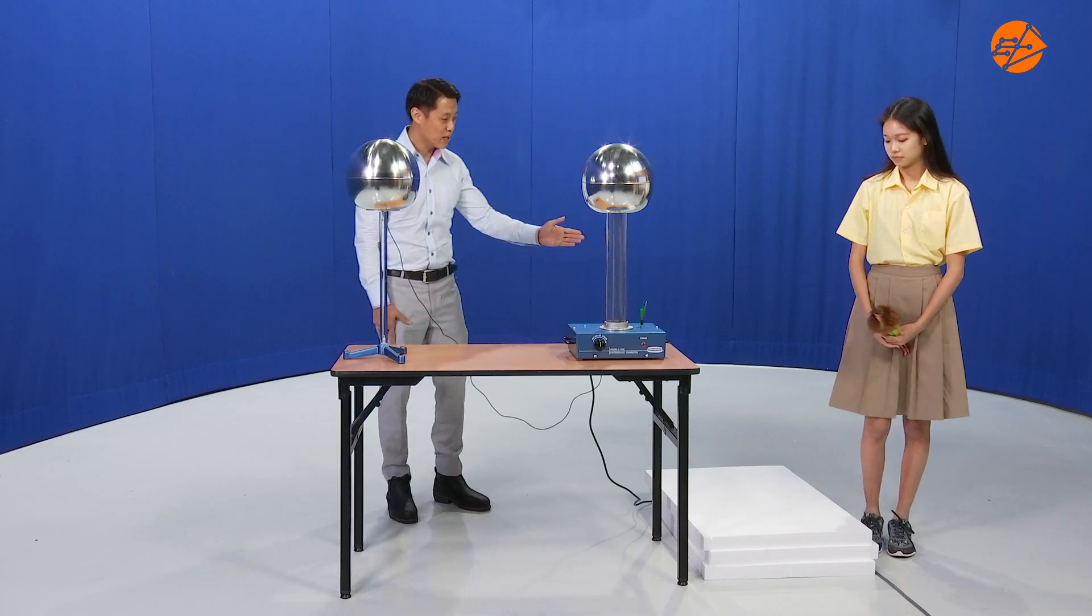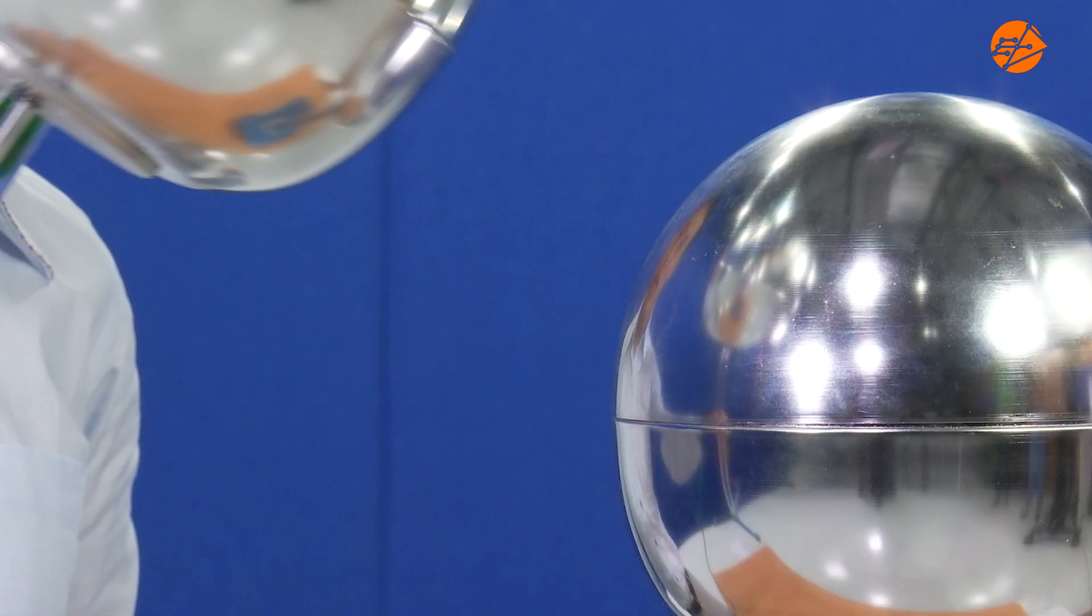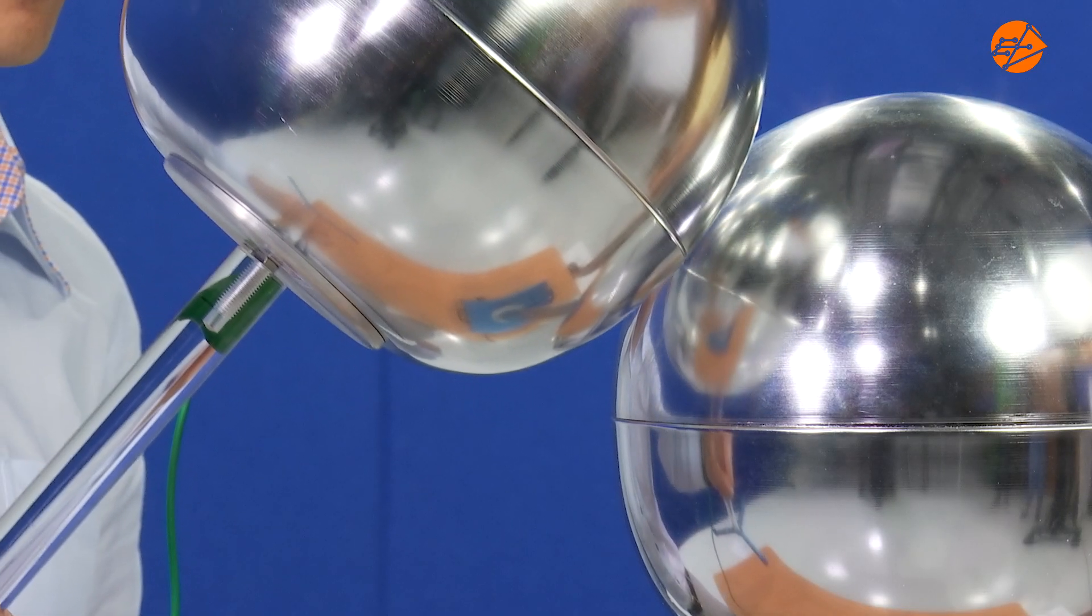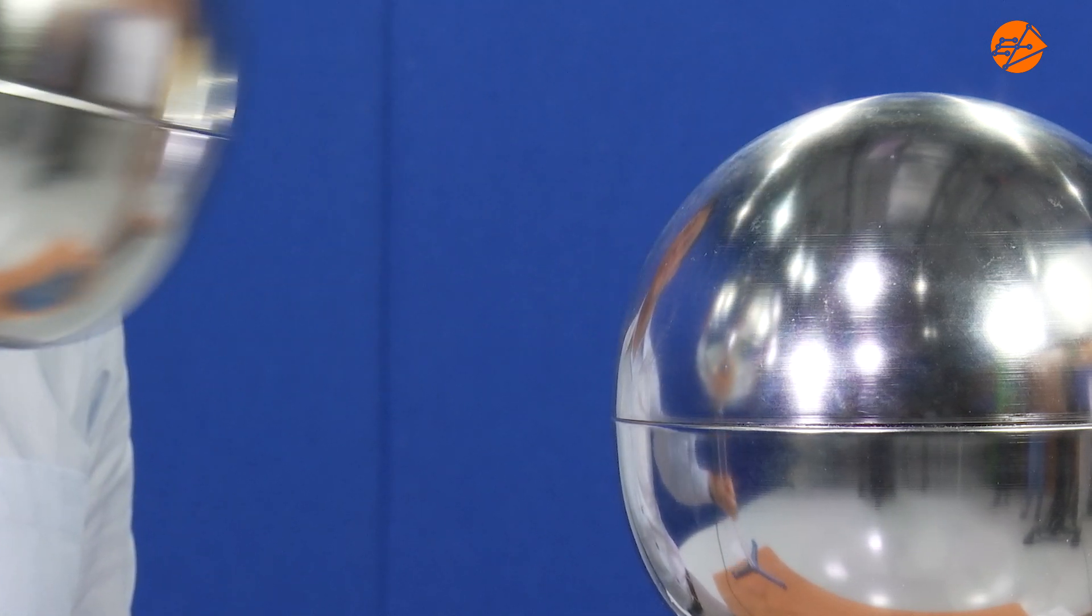My student will step onto the insulator while holding a dog. Predict and describe what will happen to my student when she touches the dome. Before touching the dome, be sure to earth it to draw away any excess charges to avoid getting a shock.